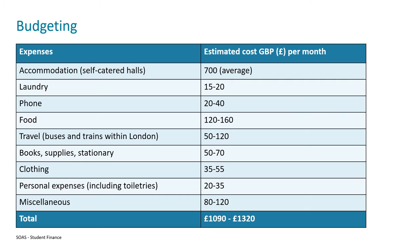Once you receive your maintenance loan payment it's really important to think about your expenses and outgoings. You'll receive this in three instalments once per term, and when you do receive it you need to think about the expenses you're going to have that term. The largest will probably be accommodation. The average for self-catered halls in London at SOAS and other estimated costs for a student studying in London come out to between roughly £1,000 and £1,300, so it's really worthwhile making a list and thinking about these different costs to give yourself a rough budget.